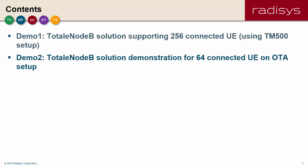This demonstration has been split into two parts. In the first part I'm going to demonstrate the 256 active user support feature which uses TM500 UE simulator setup. And in the second part of the demo, I'm going to demonstrate the same E-Node-B solution which uses OTA setup with 64 commercial CAT4 UEs.